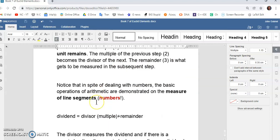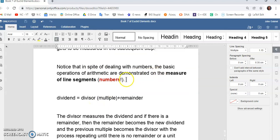And so, notice that in spite of dealing with numbers, the basic operations of arithmetic are demonstrated on the measure of line segments. Euclid uses line segments still because that's what he used in book 5. But it doesn't matter because now we're not dealing with the magnitudes of those line segments, but with their measures. Because a number, once again, is a name given to a measure that describes a magnitude or size.